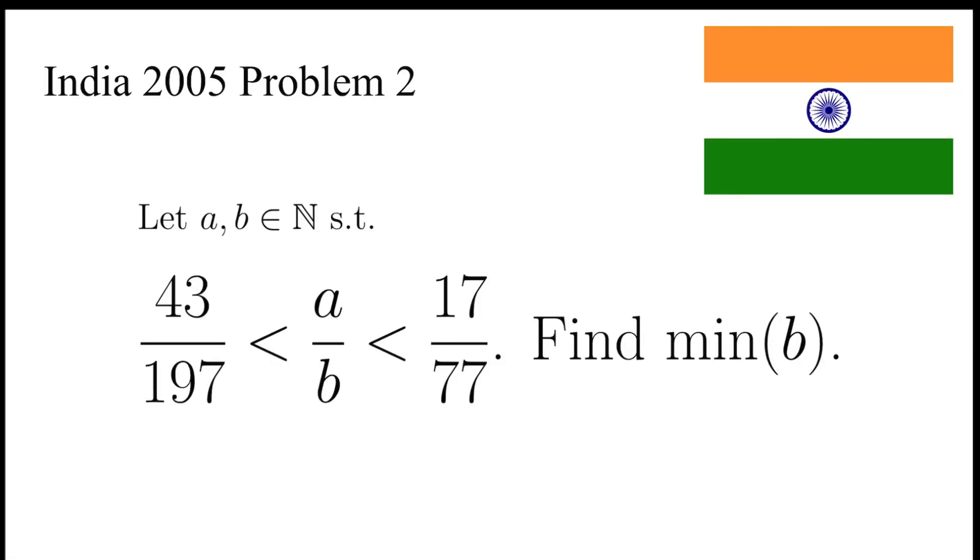In this video, I'm going to find the fraction with the smallest entries that is between the fraction 43 over 197 and 17 over 77. Pause the video, give it a try, and resume when you're ready.